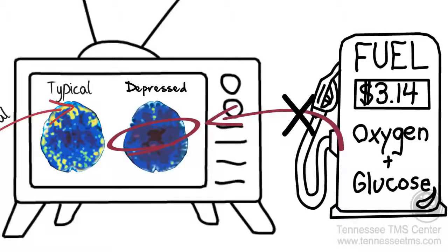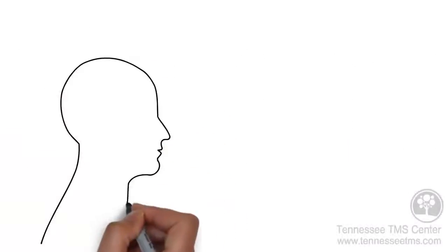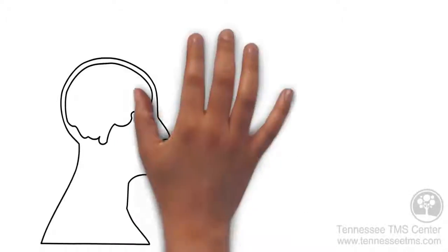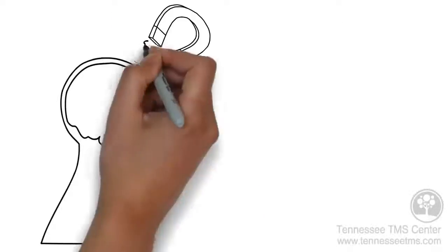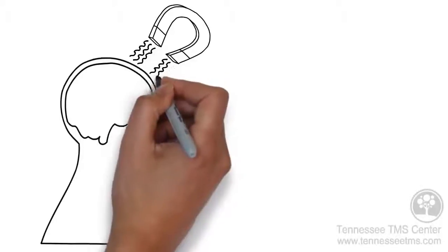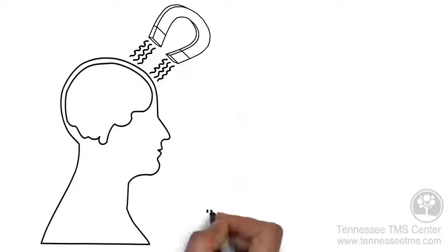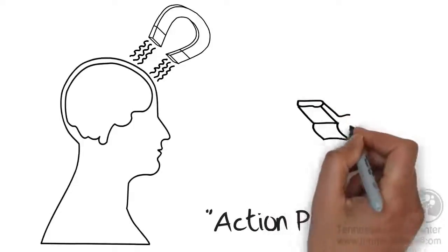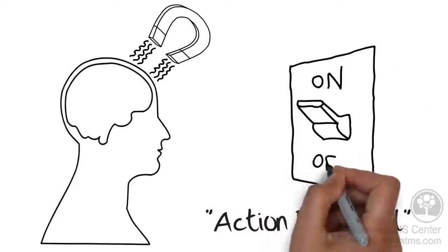We'll come back to this. Now, let's look at how treatment works. In TMS, a magnetic coil is placed over the head and uses an electromagnetic field which provides enough energy to cause the neurons at the surface of the brain to reach what we call an action potential. This is a fancy way of saying the neurons turn on.